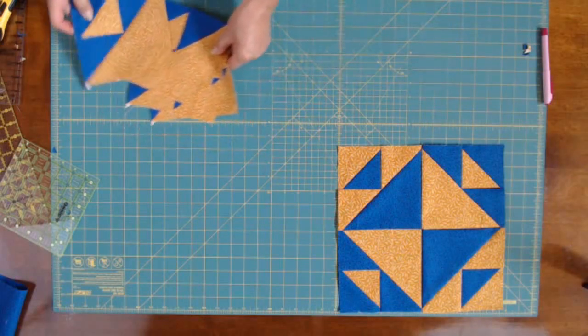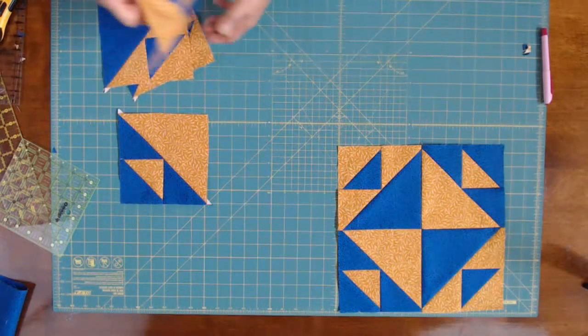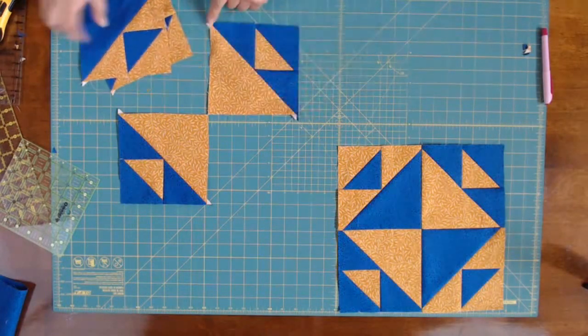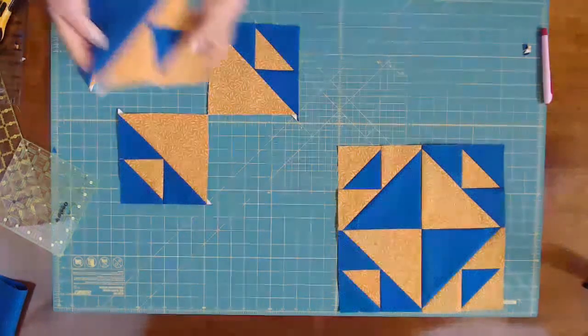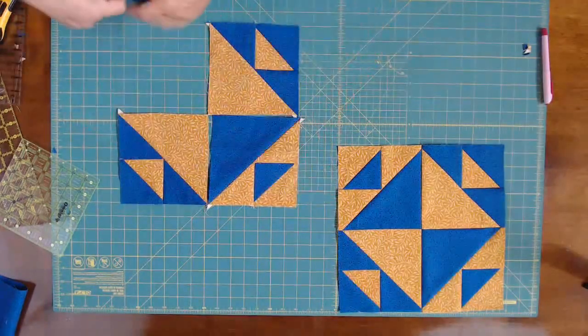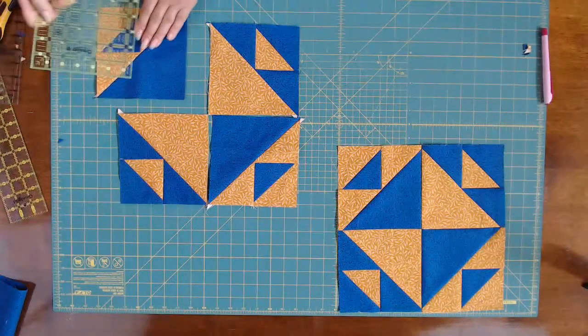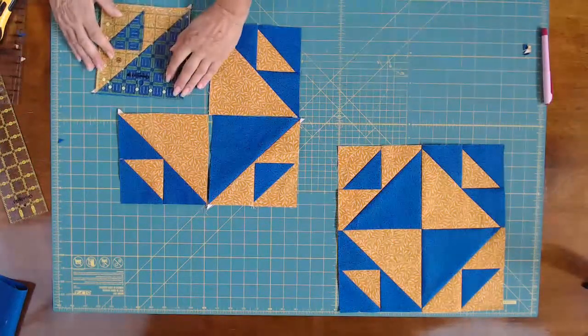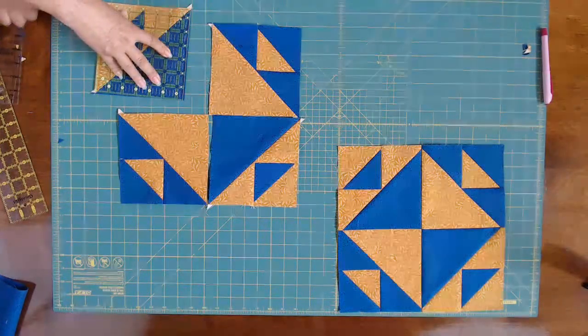All right, here are my four squares. Now these should measure six and a half inches. So what I do in order to cut off all these little tabs and square them up, I will take my six and a half inch ruler with my diagonal line and place it on my block and just trim.